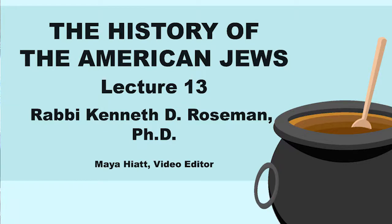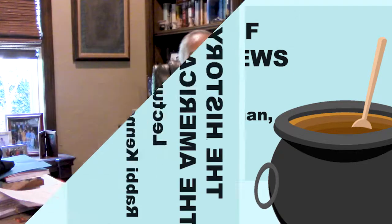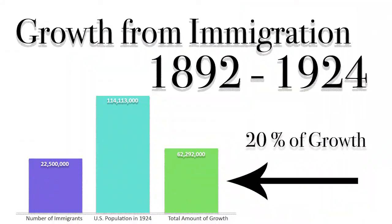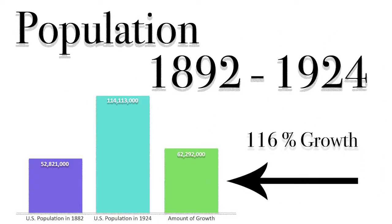Between 1882 and 1924, about 22 million 500 immigrants came to the United States. Now this country had grown during those years from about 52 million people just after the Civil War to around 114 million people. That's a growth of 61 million people during 40 years—about 116% growth. In other words, the country more than doubled its population in 40 years.